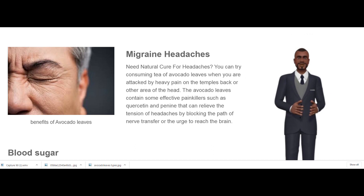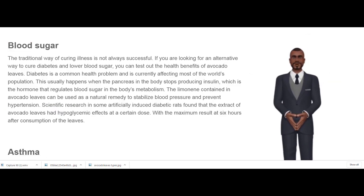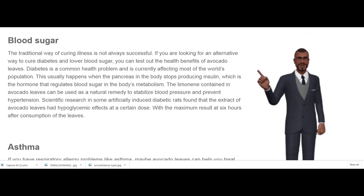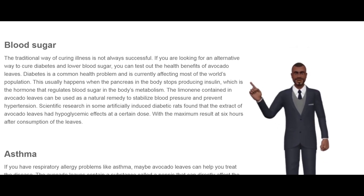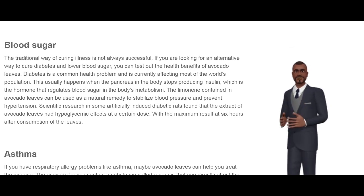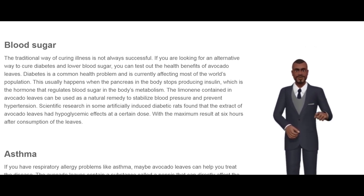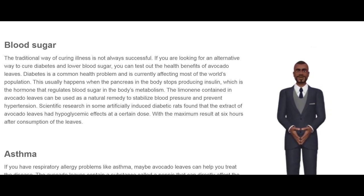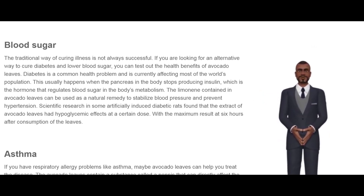Blood Sugar. If you are looking for an alternative way to manage diabetes and lower blood sugar, you can test out the health benefits of avocado leaves. Diabetes is a common health problem currently affecting much of the world's population. It usually happens when the pancreas stops producing insulin, the hormone that regulates blood sugar in the body's metabolism. The limonene contained in avocado leaves can be used as a natural remedy to stabilize blood pressure and prevent hypertension. Scientific research using artificially induced diabetic rats found that the extract of avocado leaves had hypoglycemic effects at a certain dose, with maximum results at 6 hours after consumption.